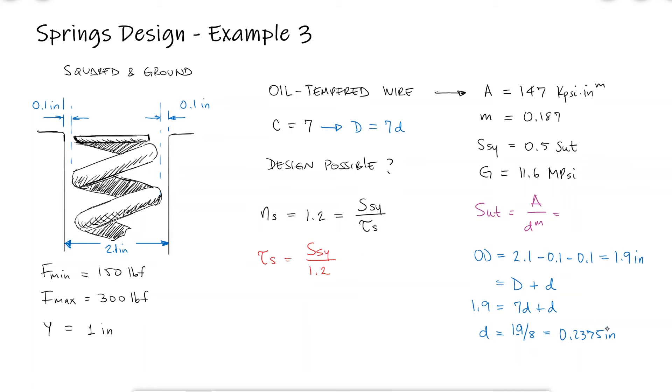With this wire diameter, we find the ultimate tensile strength, the shearing yield strength, and therefore the maximum shearing stress.